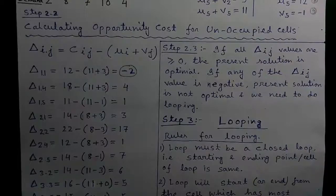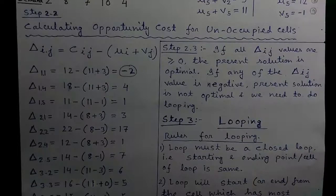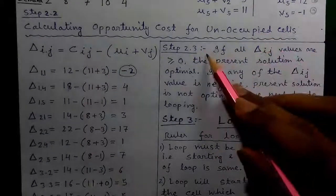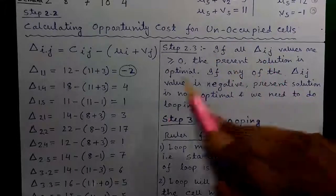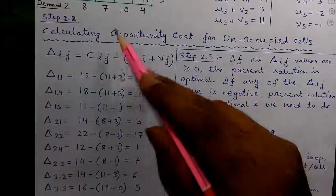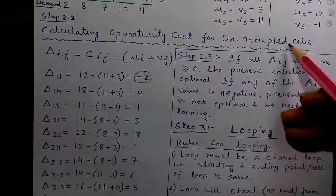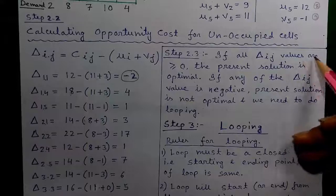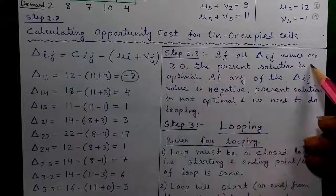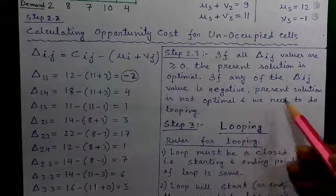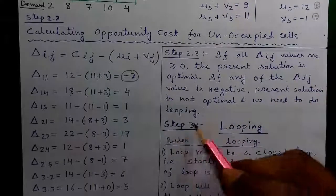Before we start looping let me give you some recap. In the previous video we ended at step 2.3. That is we calculated the UI plus VJ values for all occupied cells and the del IJ values for all unoccupied cells. We found that if all del IJ values are greater than or equal to 0, the present solution is optimal. But if any del IJ values is negative, the present solution is not optimal and we need to do the looping.